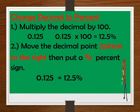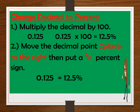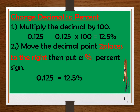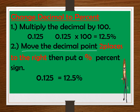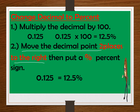One, multiply the decimal by 100. Example: 0.125 multiplied by 100. So the answer is 12.5%. The second method is to move the decimal point two places to the right, then put a percent sign.